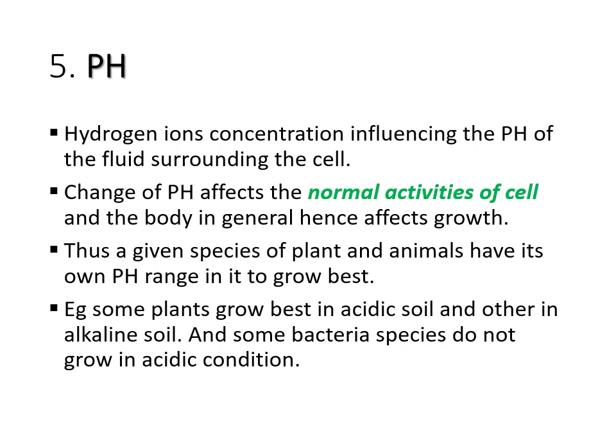Each species of plant and animal has an optimal pH range in which it grows best. For example, some plants grow in acidic soil and others grow in alkaline soil. Some bacteria species do not grow in acidic conditions. For example, to inhibit the growth of bacteria in our food, we can add vinegar, which is acidic, to create an acidic condition that is not favorable for the growth of bacteria.